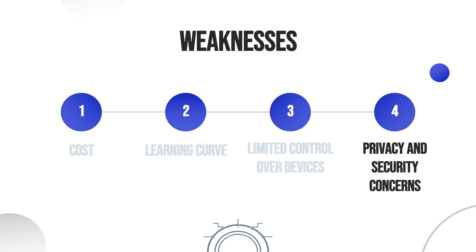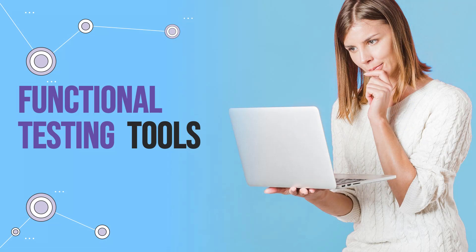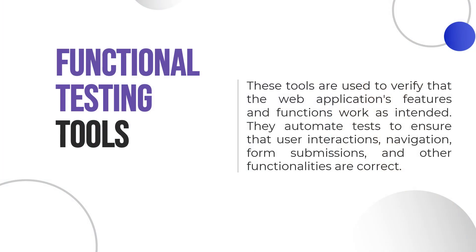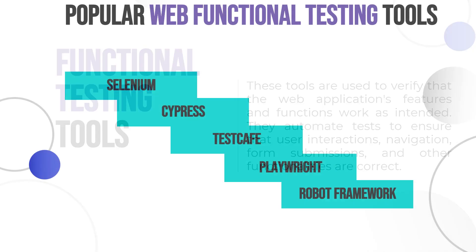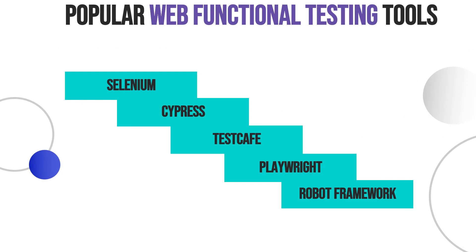Let's move to the next category of web testing tools: web functional testing tools. We won't cover tools of this category in our course, because the course is focusing on manual testing. However, being familiar with this category would be a plus. Functional testing tools are used to verify that the web application's features and functions work as intended. They automate tests to ensure that user interactions, navigation, form submissions, and other functionalities are correct. Several popular web functional testing tools are Selenium, Cypress, TestCafe, Playwright, Robot Framework, etc.